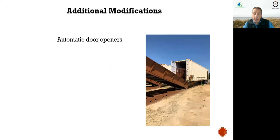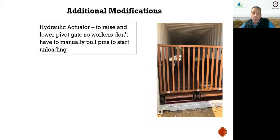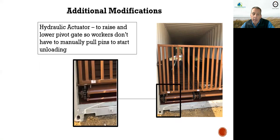We have done additional modifications. One important one was adding automatic door openers. Previously, the outside conveyors are positioned under the container to allow pig carcasses to be offloaded from the inside conveyor floor to the outside conveyor. What would happen is a worker would have to climb over this conveyor to open the doors — becoming a safety issue. So we had our team install an actuator to raise and lower the pivot gate. There's a pin down here that workers would previously have to pull in order to allow the gate to pivot so carcasses could unload.